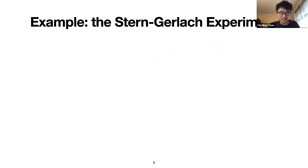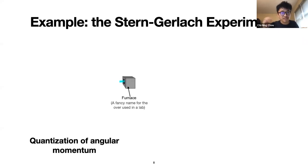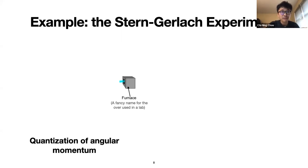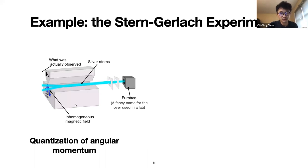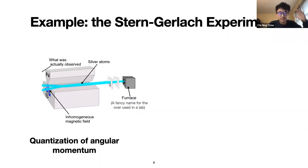To be more concrete, let me use the textbook Stern-Gerlach experiment. In this experiment we can see both the quantization of a physical quantity as well as wave-particle duality. Imagine you have a furnace — a fancy name for an oven — which heats up silver atoms and emits them through a magnetic field. If your silver atoms have some angular momentum, the field will push them either up or down according to whether the angular momentum is positive or negative, with displacement proportional to the angular momentum.